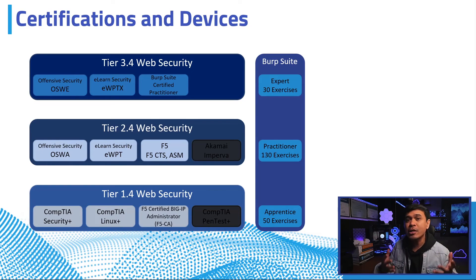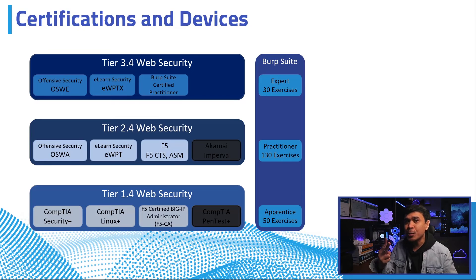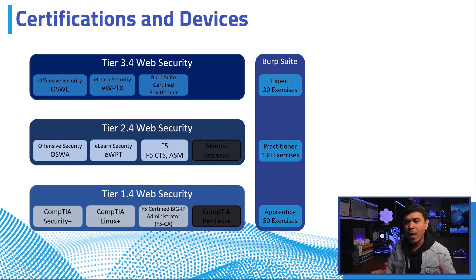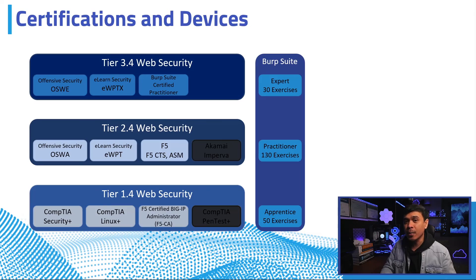What if you don't have much time or budget for nine certifications? You can do only two certs per tier, but don't skip the Burp Suite path — you still need to complete all three levels of exercises. I would skip Linux+ since you can easily self-study Linux commands. I would also drop eWPT and eWPTX, as I consider both to be easier versions of OSWA and OSWE.